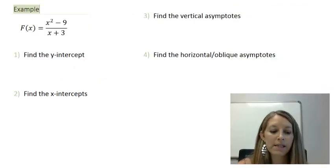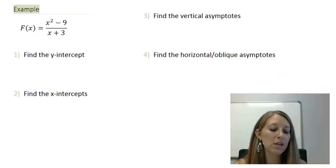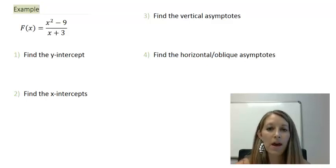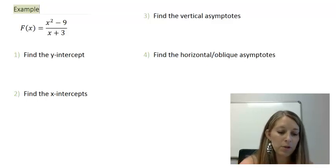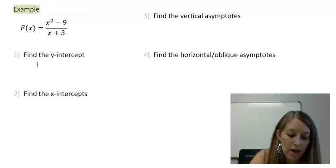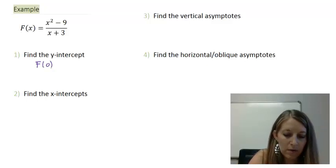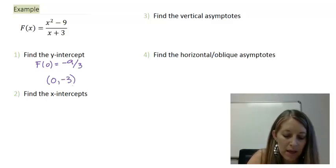So let's look at the example: f(x) = (x² - 9) / (x + 3). At first glance it just looks like a typical rational function, so we're going to work through all of the steps. Finding the y-intercept, we plug in zero. f(0) gives me -9/3, so my y-intercept is (0, -3).